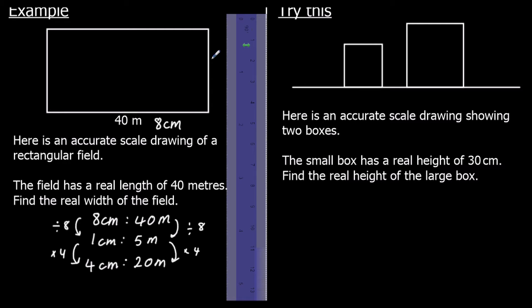If we had measured both dimensions first — 8 cm and 4 cm — we could see that the width is half the length. So it must be half of 40, which is 20 meters in real life. We could have gone straight to the answer that way.